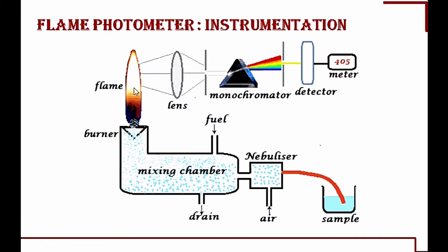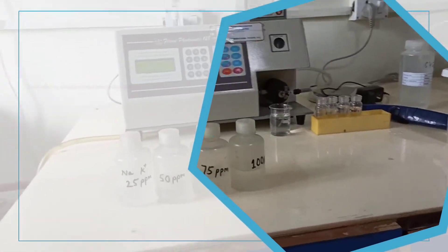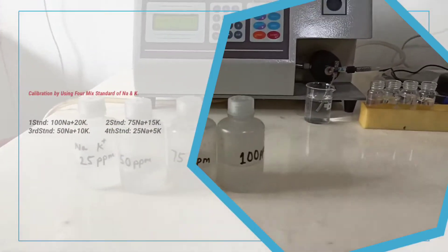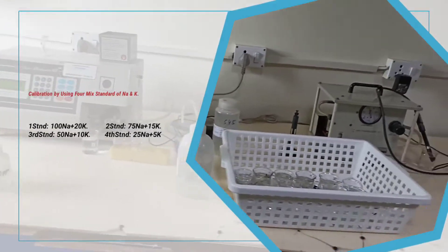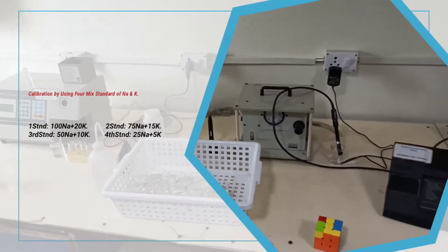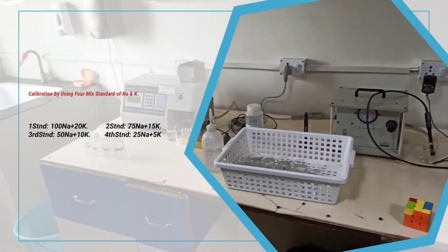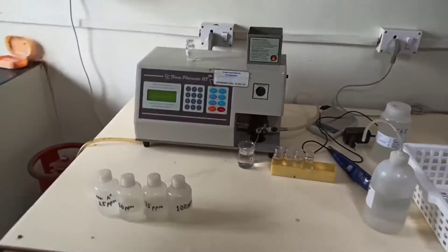Now let's move to how to calibrate the flame photometer. We have prepared five standards — these are mixed standards. In front of me you can see concentrations of 100, 75, 50, and 25. In the first standard, the sodium concentration is 100 and the potassium concentration is 20. We prepared the standards in that ratio.